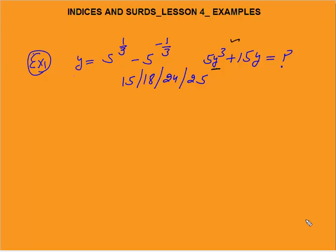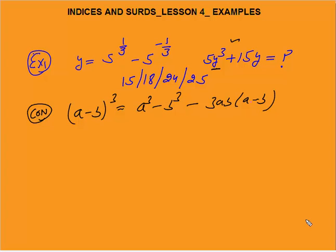We know y, and we need to calculate y³. We will go by the conceptual way. I will solve this question with the help of the conceptual approach because I can't solve this question with the help of options or any kind of assumptions. Now, you must know that (a - b)³ equals a³ minus b³ minus 3ab(a - b). Here, a is 5^(1/3) and b is 5^(-1/3).